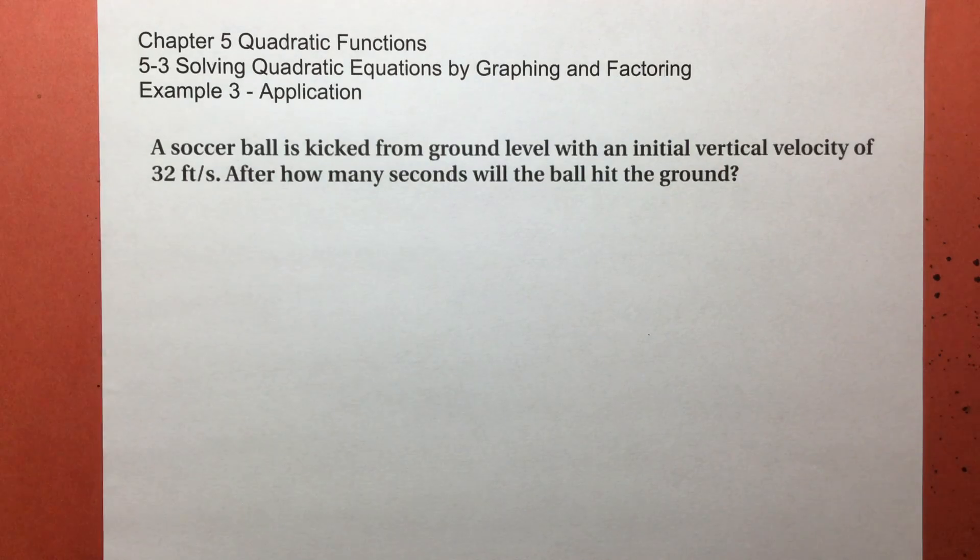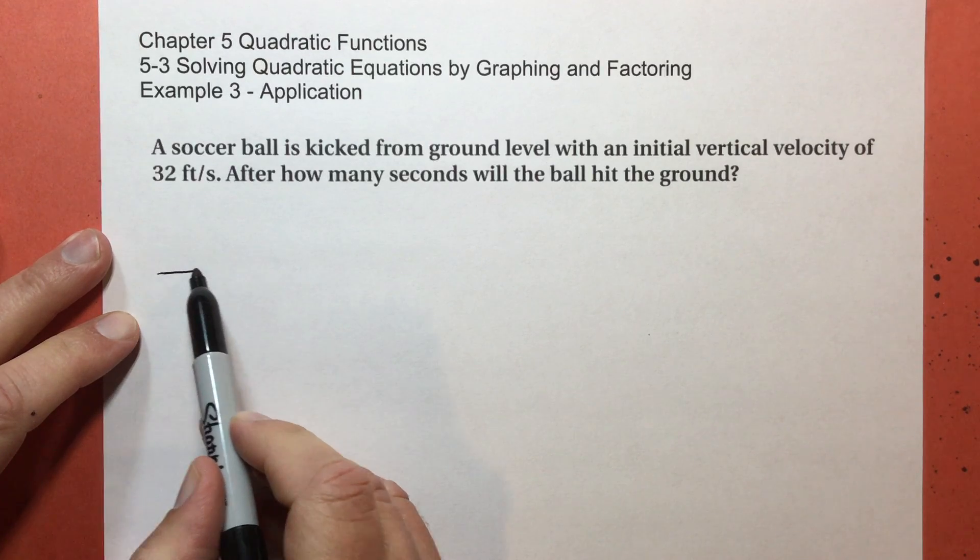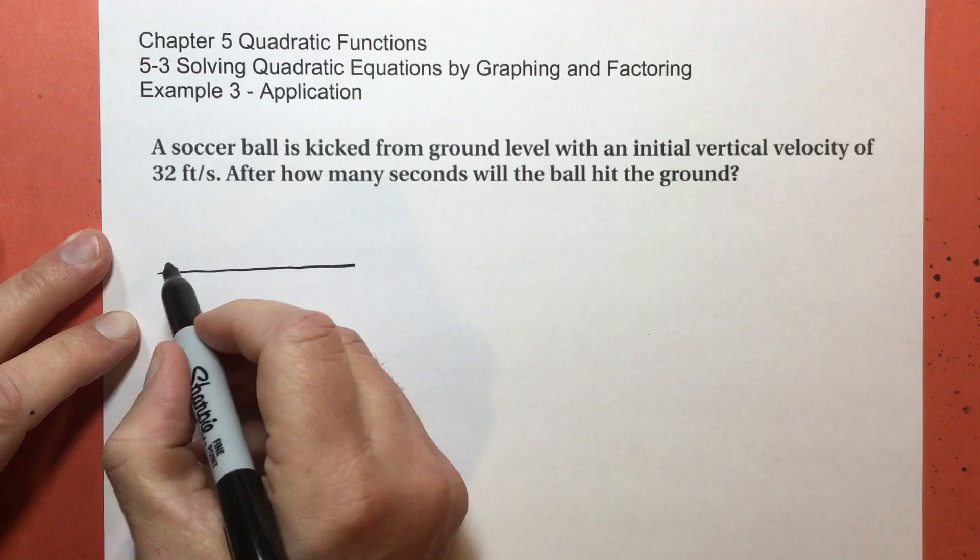So I'm going to introduce an idea to you, something very important in high school physics and college physics, just one little formula. In this example, a soccer ball is kicked from ground level, and it's going to have an initial vertical velocity that's straight up of 32 feet per second. So what's going to happen, and this is where I have to talk a little bit about physics. So here's the ground, and here's the soccer ball.